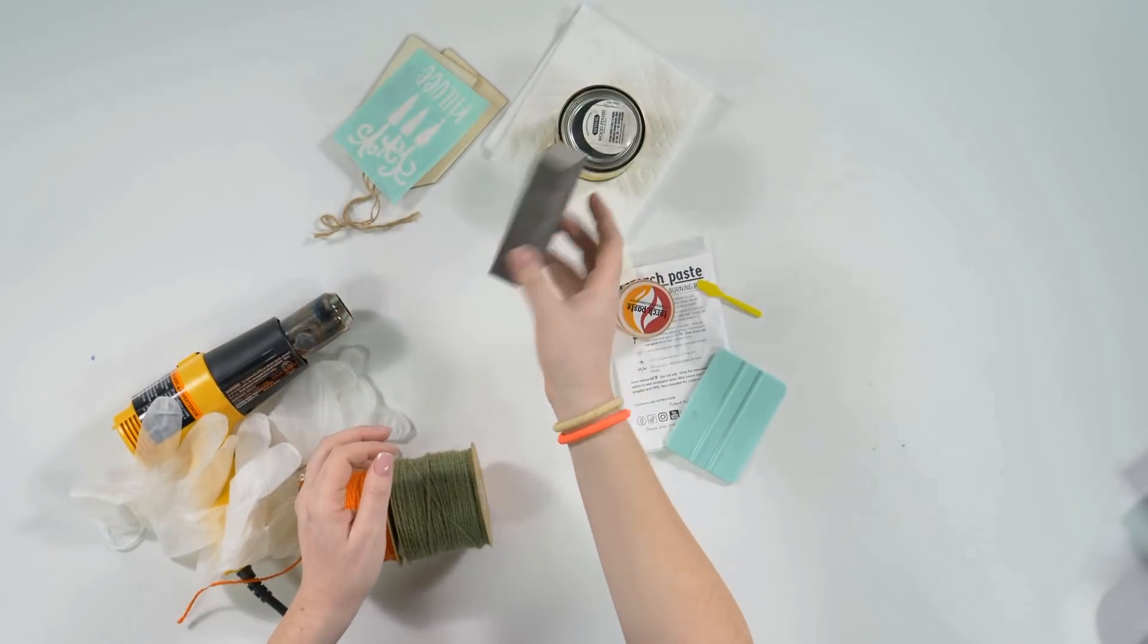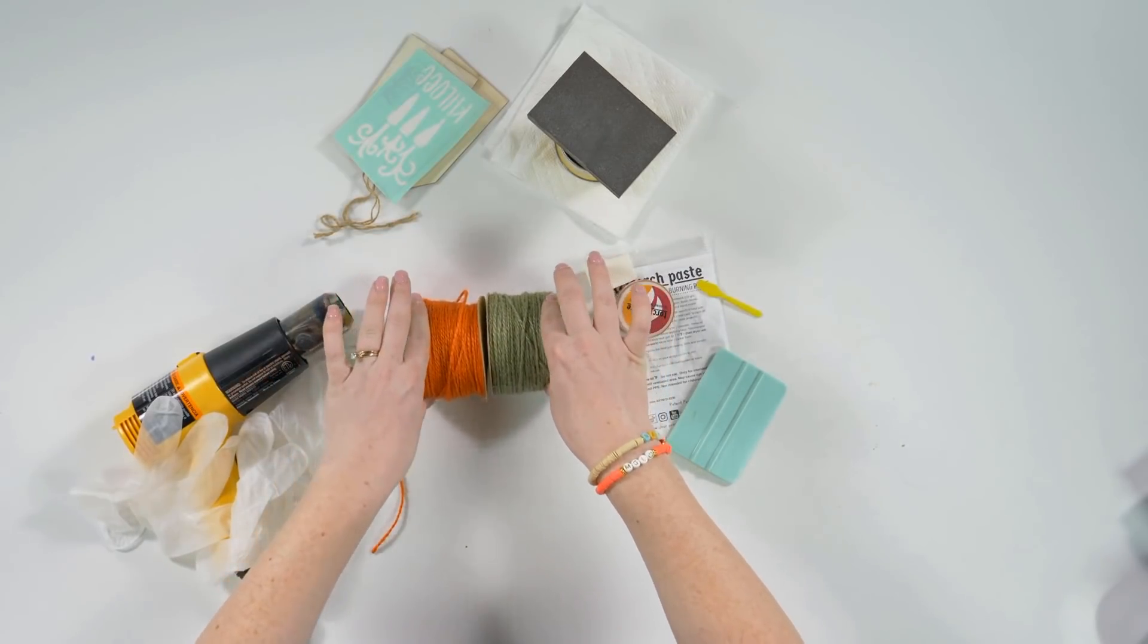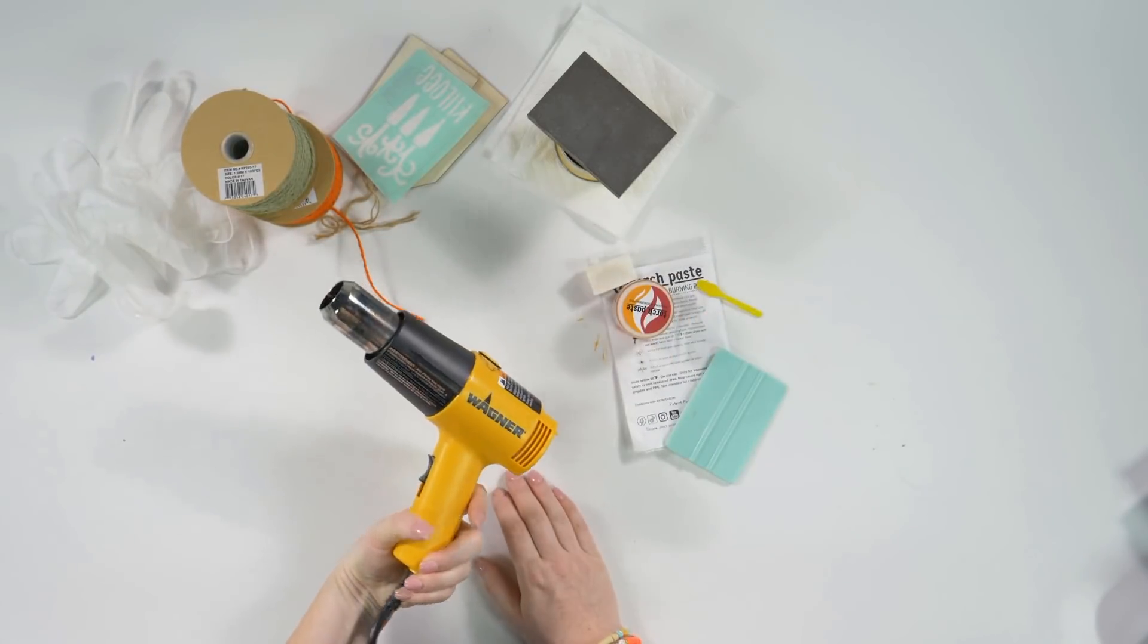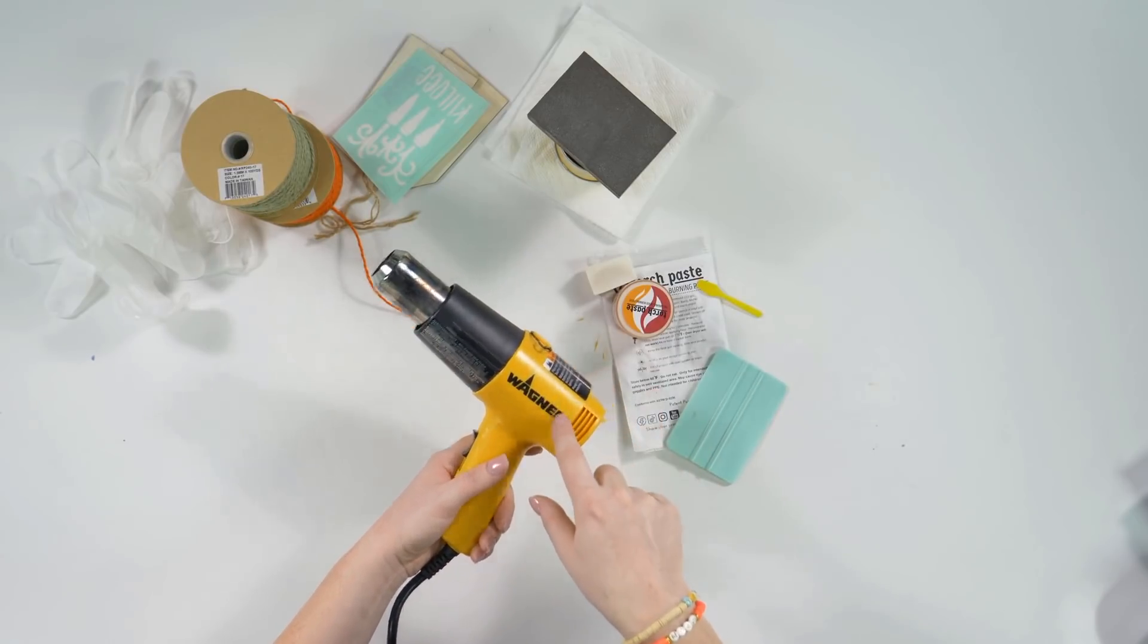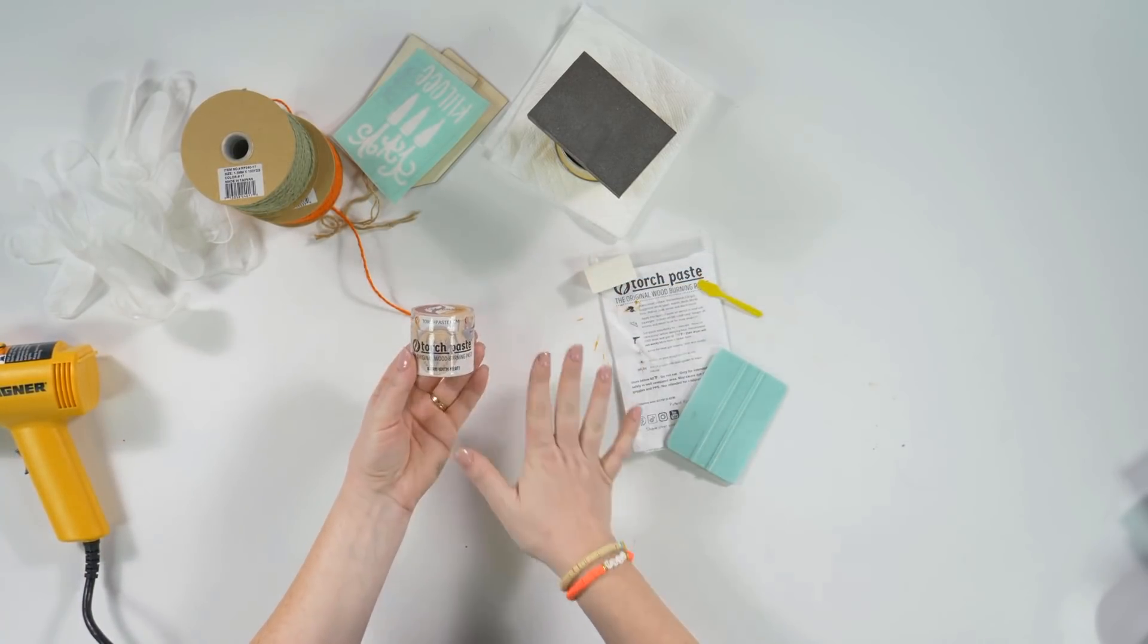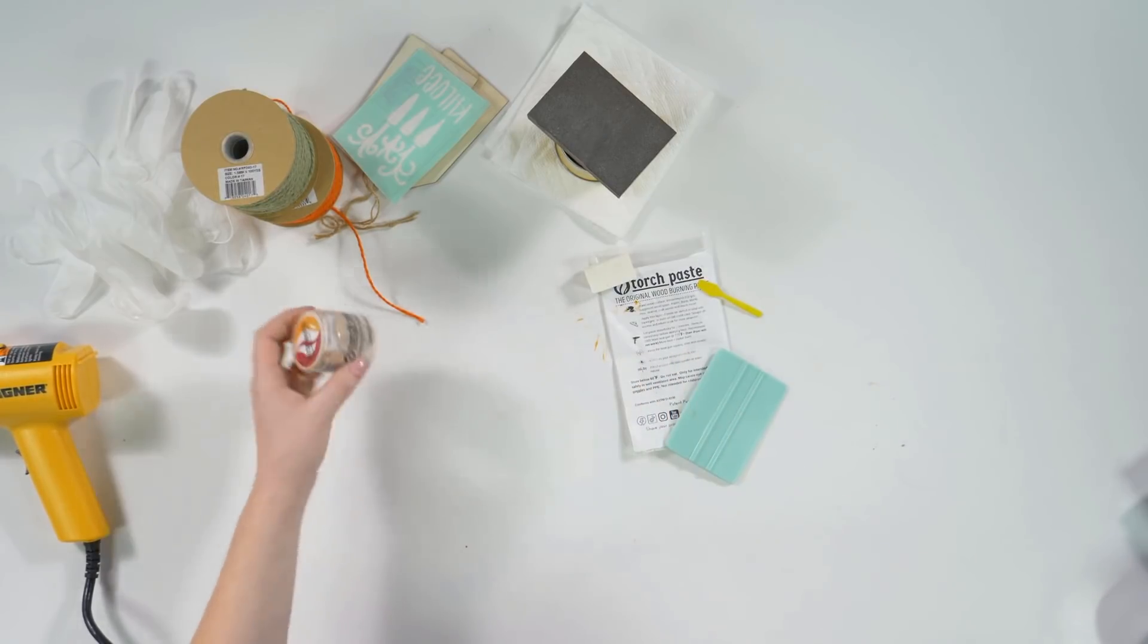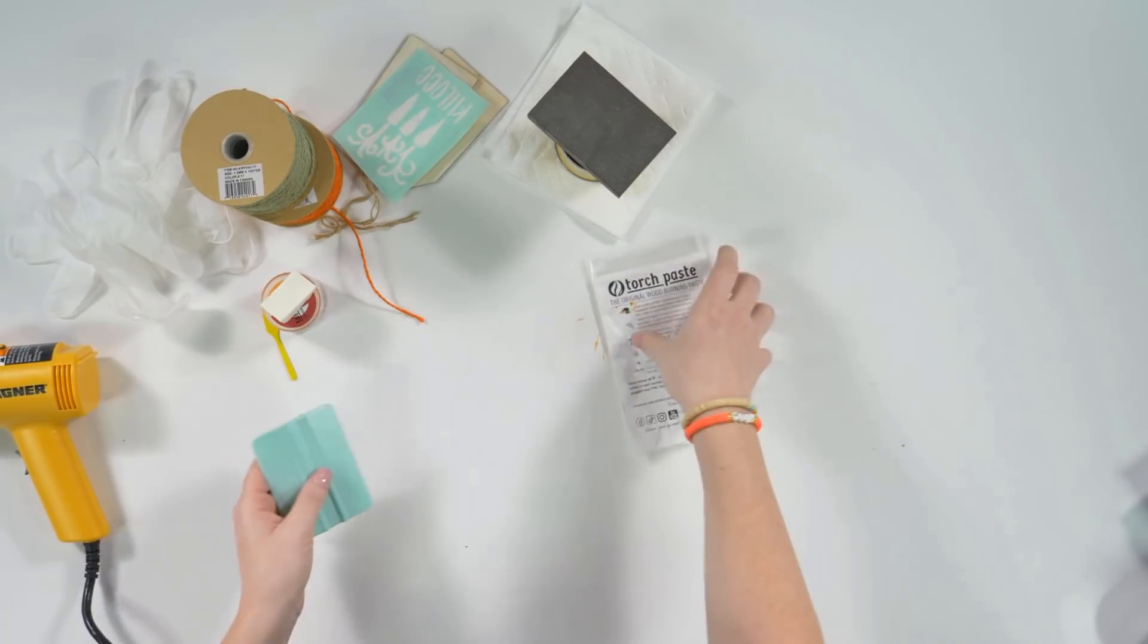You're going to need like an 80 grit sanding block. I've got yarn. You don't have to use orange and green, but I'm going to show you guys a cute little yarn trick to make the top of it look like a carrot. You're going to need gloves for stain as well as for this, and you're going to need a heat gun. If you've got an embossing heat gun, you're probably going to want to use a bigger, hotter one. And then you're also going to need your torch paste. This is going to literally make your project into a wood burning masterpiece. It comes with a little spatula, but we're going to actually use a little makeup sponge and then you're going to need a burnishing tool.